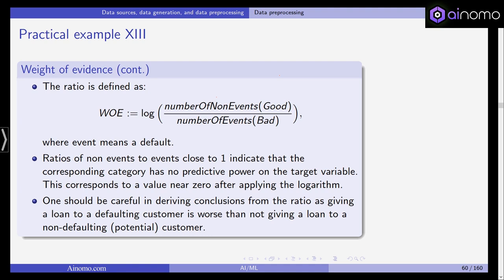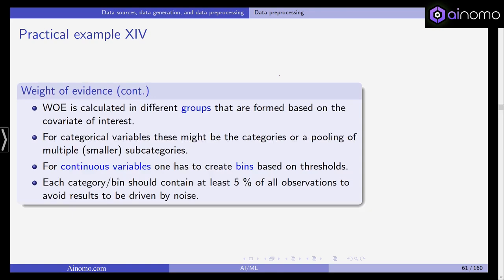One should be careful in deriving conclusions from the ratio, as giving a loan to a defaulting customer is worse than not giving a loan to a non-defaulting potential customer. This is a purely data-driven approach to get a first glimpse of the predictive power of our covariates, apart from being completely void of any economic theory.